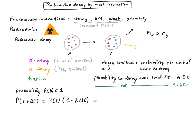We can rewrite this for infinitely small delta t using the time derivative of the probability. We can check that the solution to this equation is p of t equals p of 0 exponential minus lambda t.